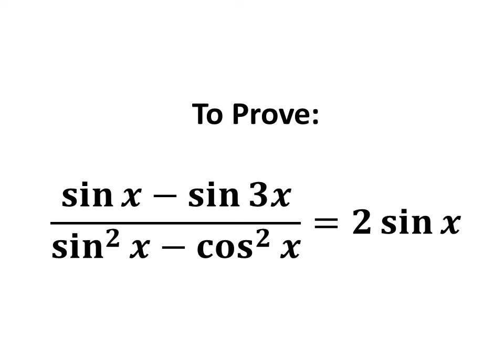In this video, we will learn to prove the equation sine of x minus sine of 3 times x upon square of sine of x minus square of cosine of x is equal to 2 times sine of x.